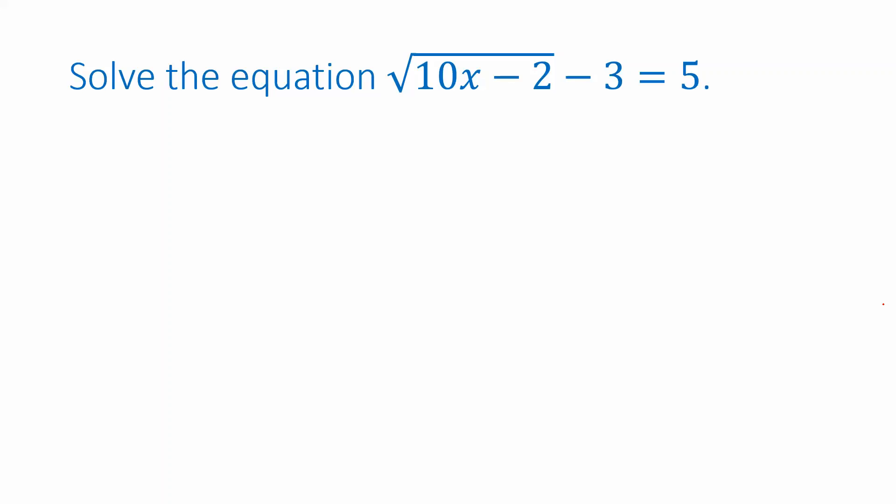After you got that value, you'd subtract this 2. After you did that, you'd take the square root of the whole thing. And after you did that, you'd subtract 3. And if we're going to isolate x, we have to undo those in the reverse order. So that means the first thing we have to undo is subtracting the 3. We need to add 3 to both sides to begin with.